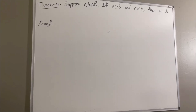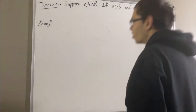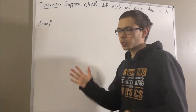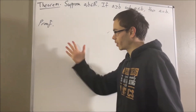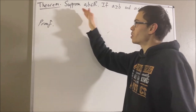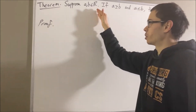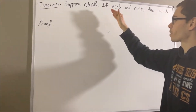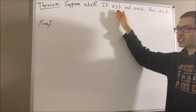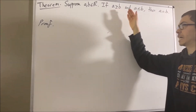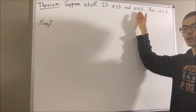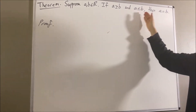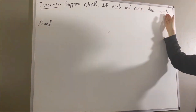Hello! In this video, we are going to prove the following theorem. Suppose A and B are real numbers. If A is greater than or equal to B and A is less than or equal to B, then A is equal to B.